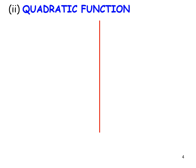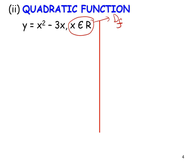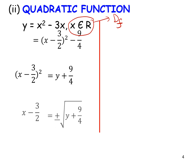For a quadratic function using the algebraic approach, let y = x² − 3x where x is real. The domain is already stated: x is real. For the algebraic approach, convert the quadratic into completing-the-square form, giving (x − 3/2)² − 9/4. Then rearrange: (x − 3/2)² = y + 9/4, and solving gives x − 3/2 = ±√(y + 9/4).